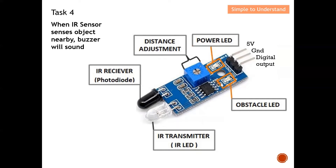Next, there is the obstacle LED. When an object comes near the IR sensor, you will see a green LED light up for the obstacle indicator. As for the pins: this part is connected to 5V, this part is connected to ground, while this part is the digital output from the IR sensor. If it senses something it will indicate at this pin; if there's nothing, it will also indicate at this pin.